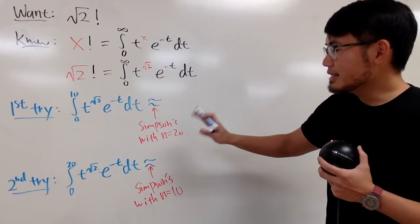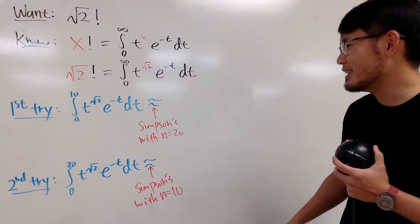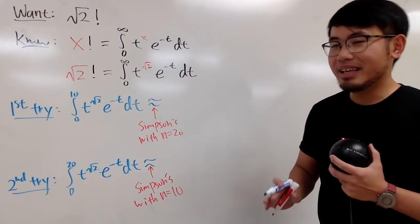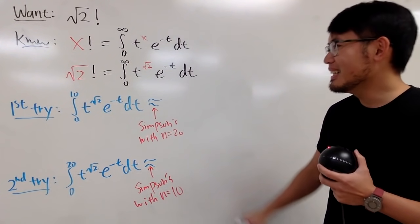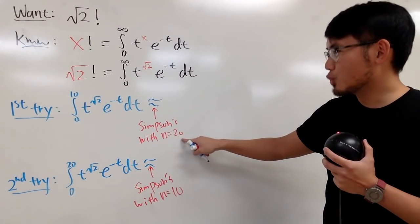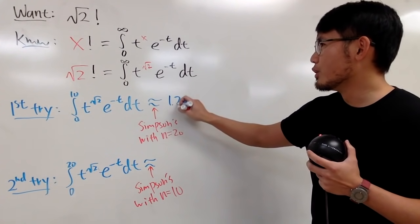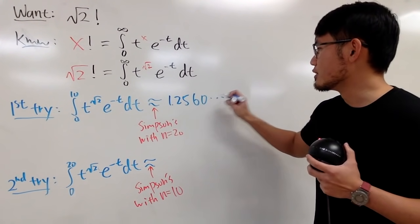Cool. So, you guys can find more links in the description because I have videos on the Simpson's rule already. And I will just tell you guys what the answers are. If you go from 0 to 10 with n equals 20, the answer that you get is approximately 1.2560, and so on, of course.